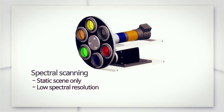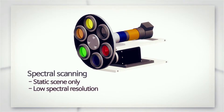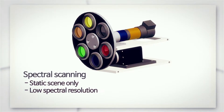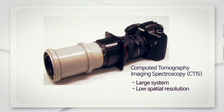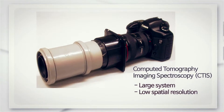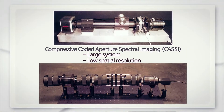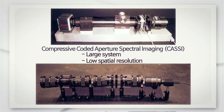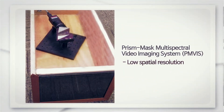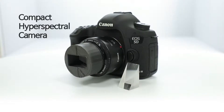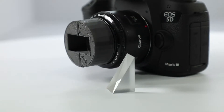Existing hyperspectral camera technologies have disadvantages of taking too long to capture or having low accuracy. The reasons behind these are: first, the camera system itself is complex, and second, the algorithm essential to restore images from the photos taken is inaccurate.